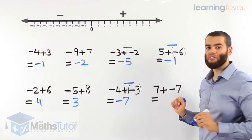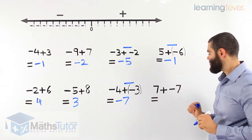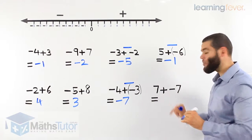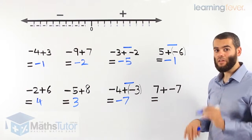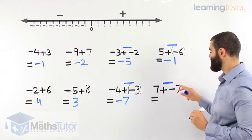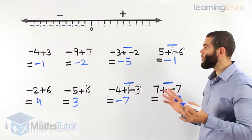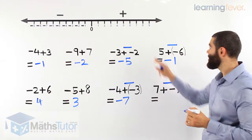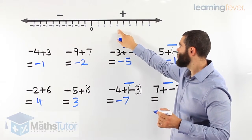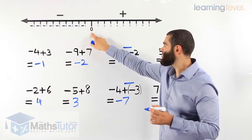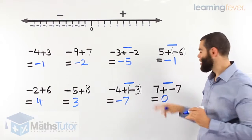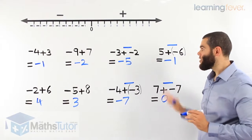7 plus negative 7. Again, a plus and a minus next to each other — they don't like one another, they have a fight, and minus will always win. So it's 7 take away 7. We start at 7 and go left: 1, 2, 3, 4, 5, 6, 7. Obviously our answer is 0. 7 take away 7 is 0.